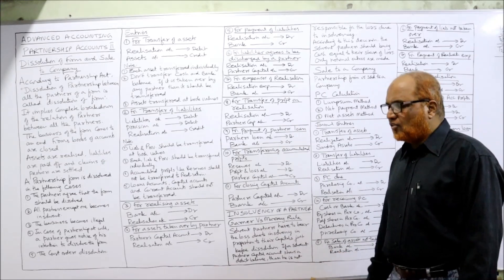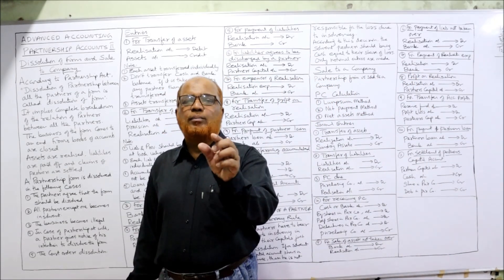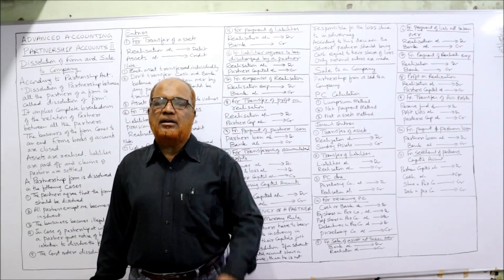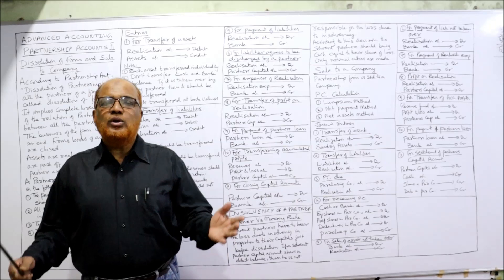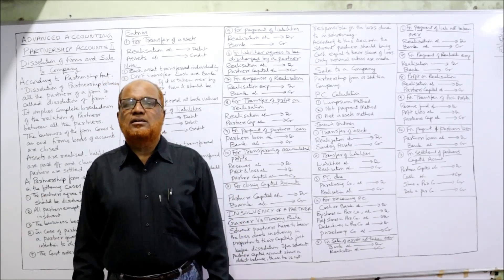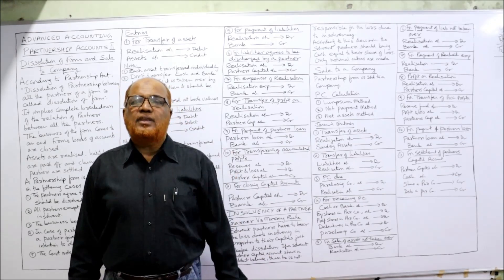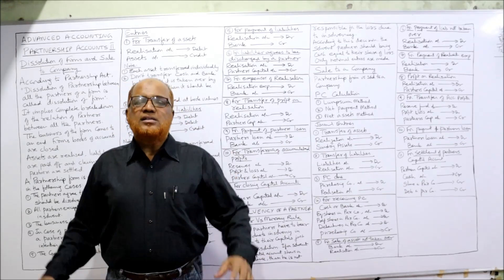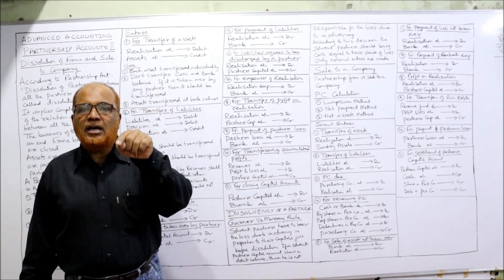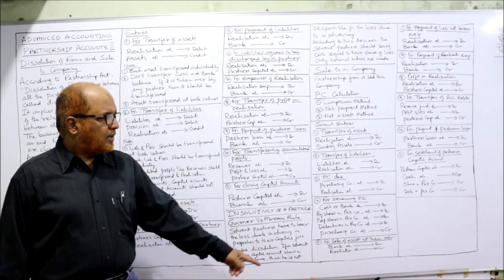Now, one more topic: insolvency of a partner. Sometimes a partner becomes insolvent. Insolvent means a person who is unable to pay all his liabilities — a person not in a position to pay all his liabilities. In other words, liabilities are more than assets. That person is called insolvent. Suppose in a partnership firm one of the partners has become insolvent — what is the accounting procedure?